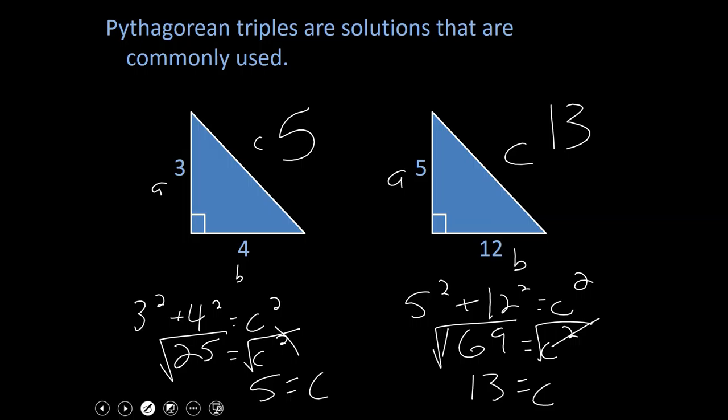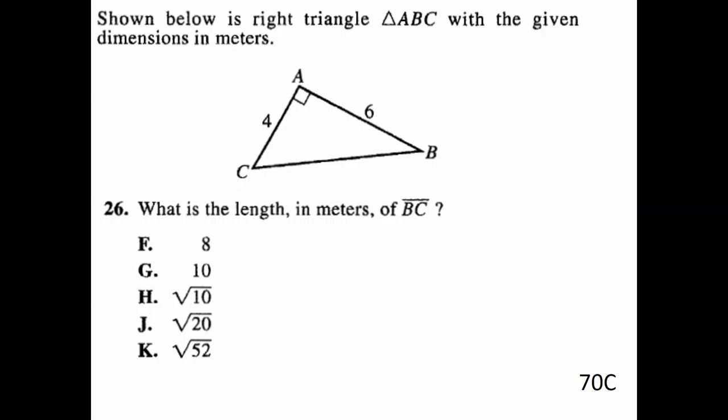So again, if you see a triple, it's five, 12, 13. That means if you recognize my legs are five and 12, hypotenuse is 13. If you recognize hypotenuse of 13, leg of five, the other leg is 12. So again, just keep in mind three, four, five, and keep in mind five, 12, 13.